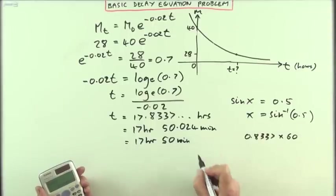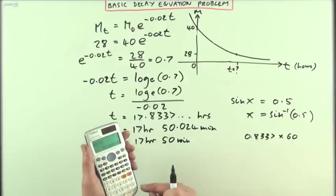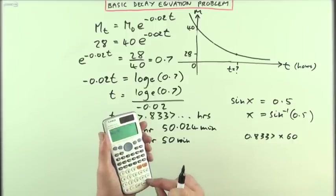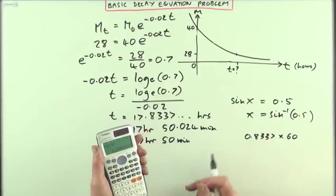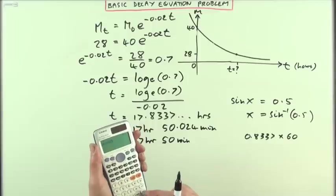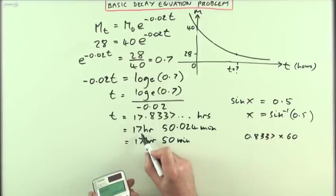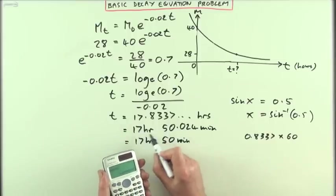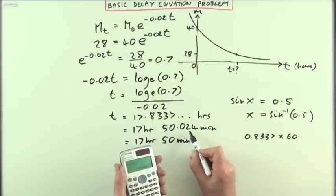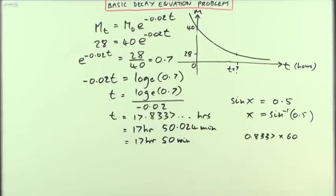If you wanted to go further and take it to seconds, I would just take away the 50 minutes and that leaves you with 0.024 of a minute. Multiplying it by 60 would give me the seconds, and that's 1.48. So if you wanted, it's 17 hours, 50 minutes, 1.5 seconds. But it just said what is it to the nearest minute, so that would be the answer.